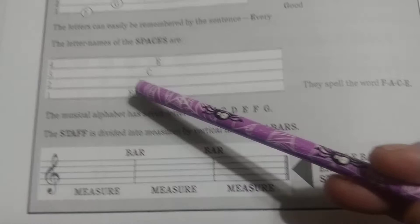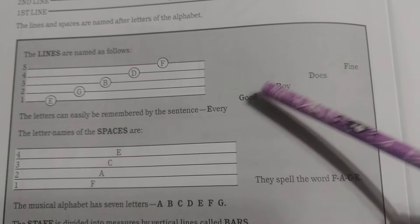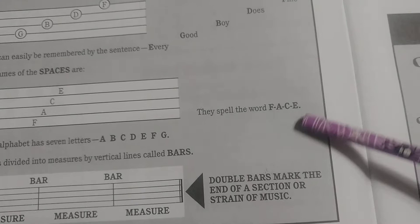It's easy to remember a sentence for the lines. Our book says Every Good Boy Does Fine, but I prefer to use Every Good Band Deserves Funding. Our spaces go in the order F, A, C, E from the bottom to the top, so we can just remember the word FACE. So what we like to say is: keep your FACE in the space.